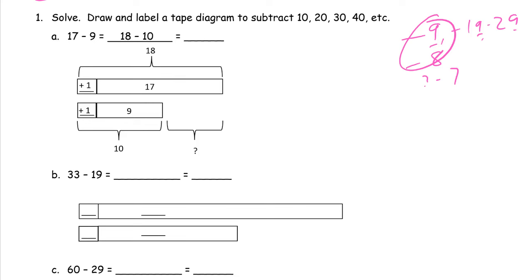The idea is that you don't subtract nine, you subtract ten. And you don't subtract eight, you subtract ten — so you add two. You'll see what the tape diagrams look like. If you use it for minus nines or minus eights, you want to do minus tens instead. What you're going to be adding to both your minuend and your subtrahend is what you need to make it a minus ten — you're looking at your subtrahend to see what you need to add to both numbers.